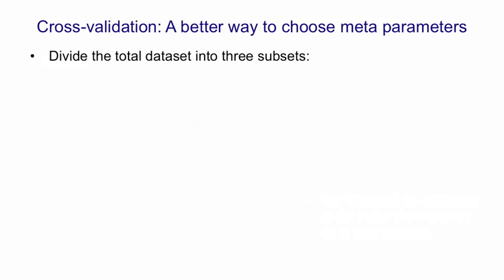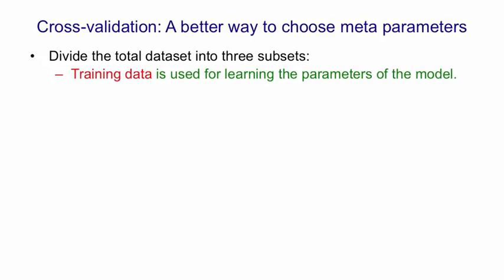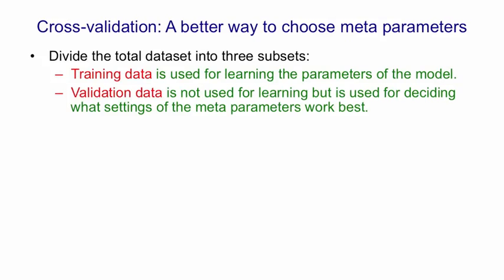So here's a better way to choose the metaparameters. You start by dividing the total dataset into three subsets. You have the training data, which is what you're going to use to train your model. You hold back some validation data, which isn't going to be used for training, but is going to be used for deciding how to set the metaparameters. In other words, you're going to look at how well the model does on the validation data to decide what's an appropriate number of hidden units, or an appropriate size of weight penalty.